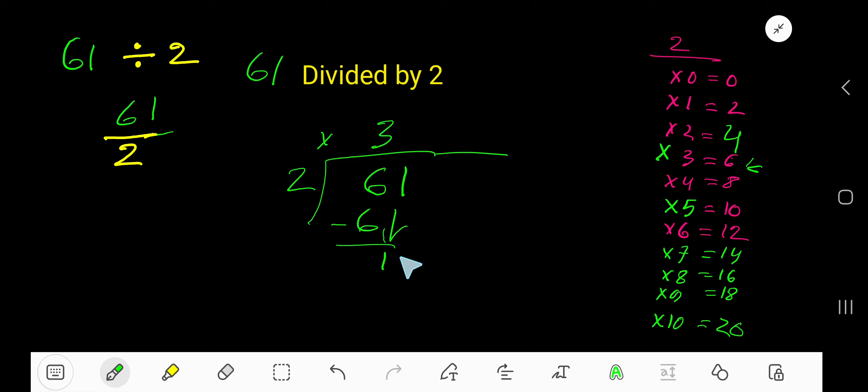2 goes into 1, how many times? Since 1 is less than 2, so actually 0 times. Write 0, then multiply 0 times 2. 0 times 2, which is 0.